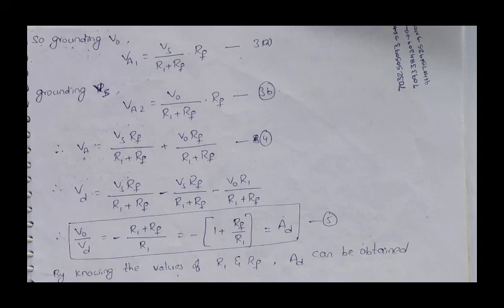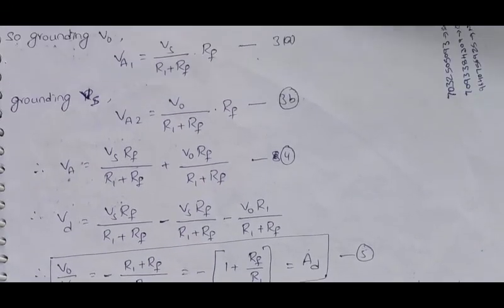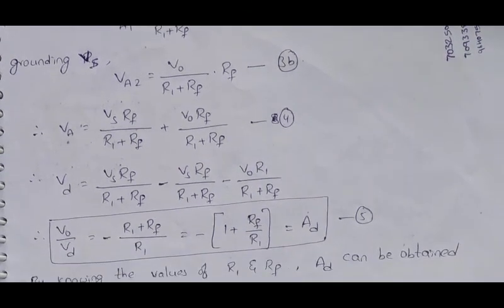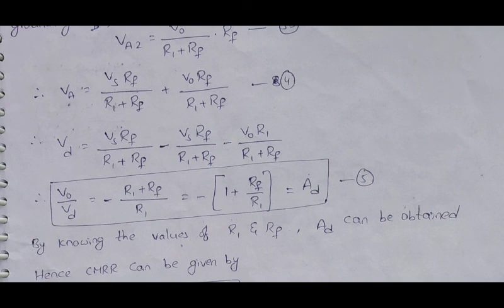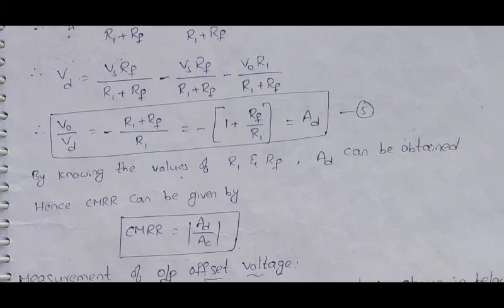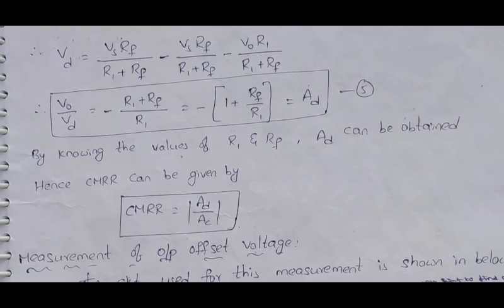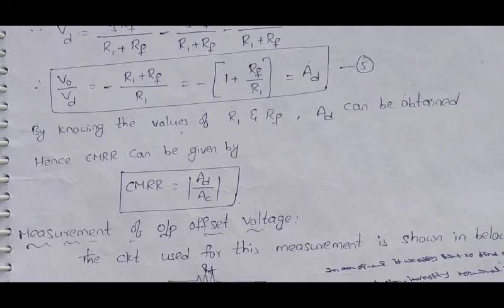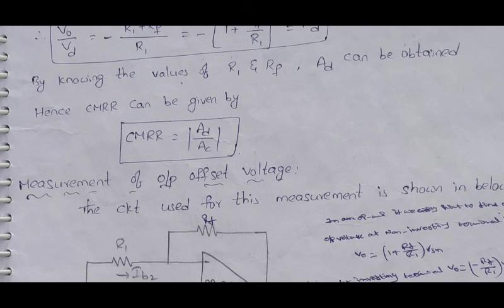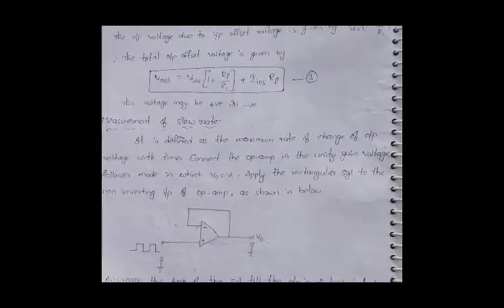The differential voltage Va equals Va1 plus Va2, where Va2 equals VS·Rf divided by (R1 plus Rf). From the output expression, V0 divided by Vd equals 1 plus Rf divided by R1. By knowing the values of R1 and Rf, the differential gain AD can be obtained. Then CMRR equals AD divided by AC, which is the ratio of differential gain to common mode gain.